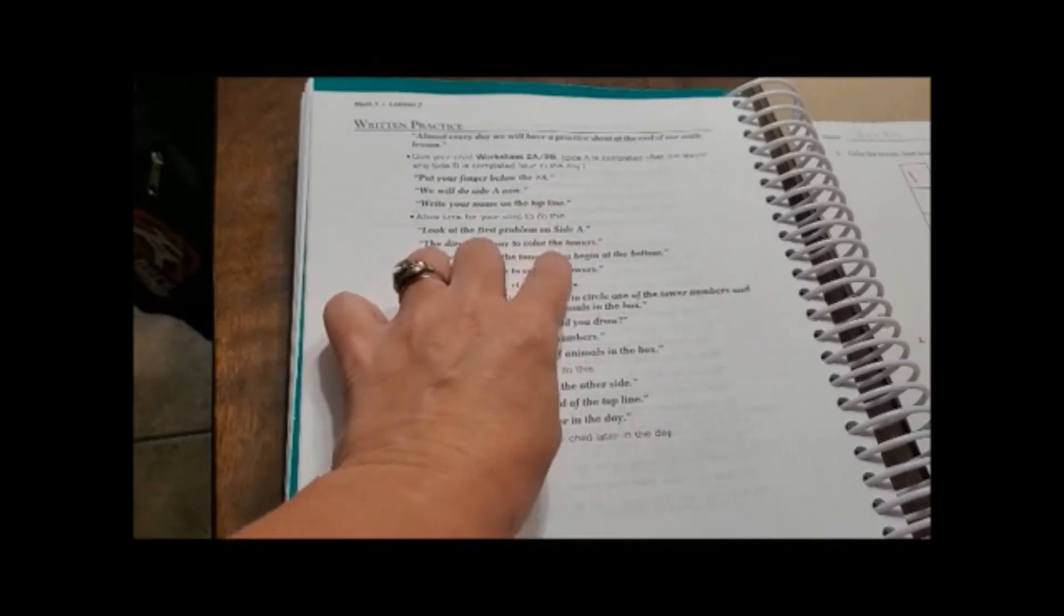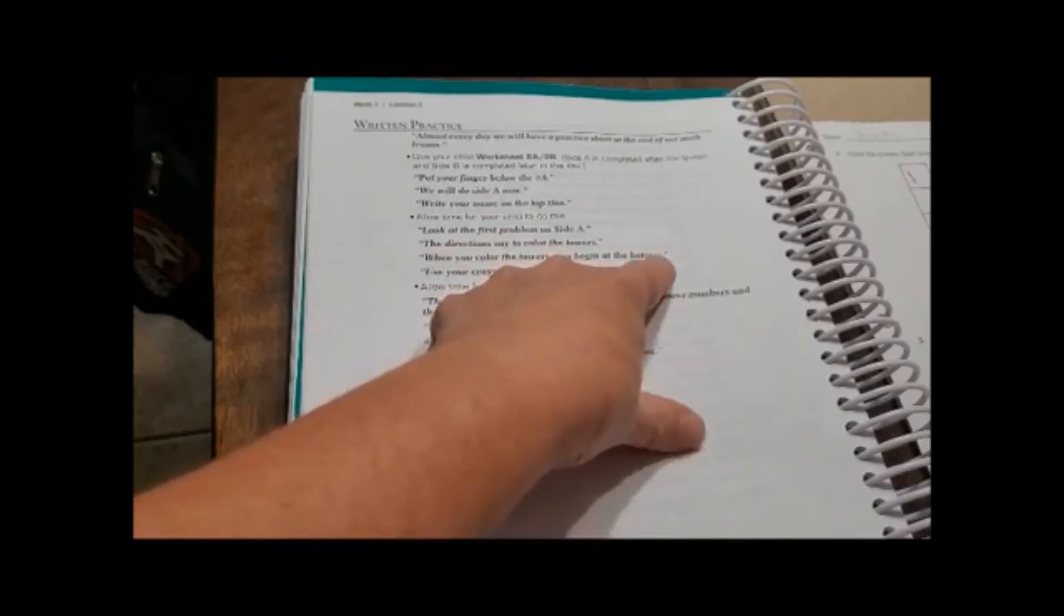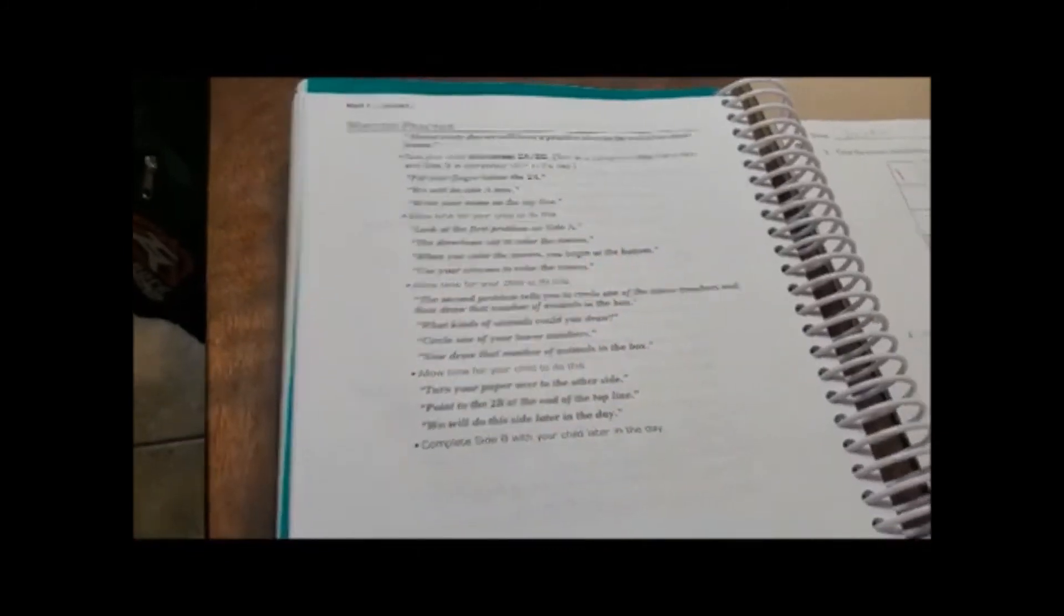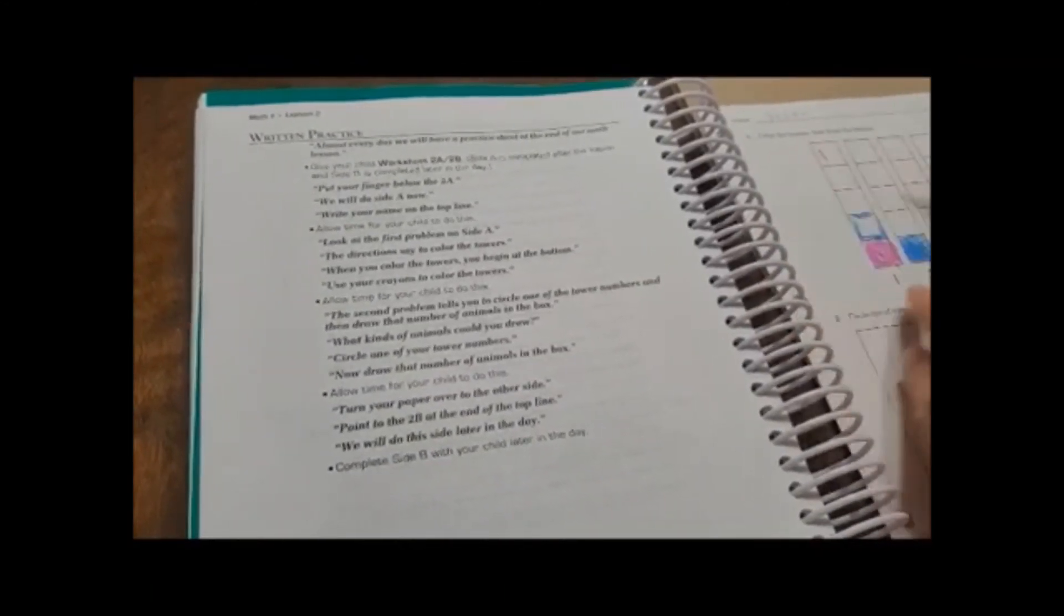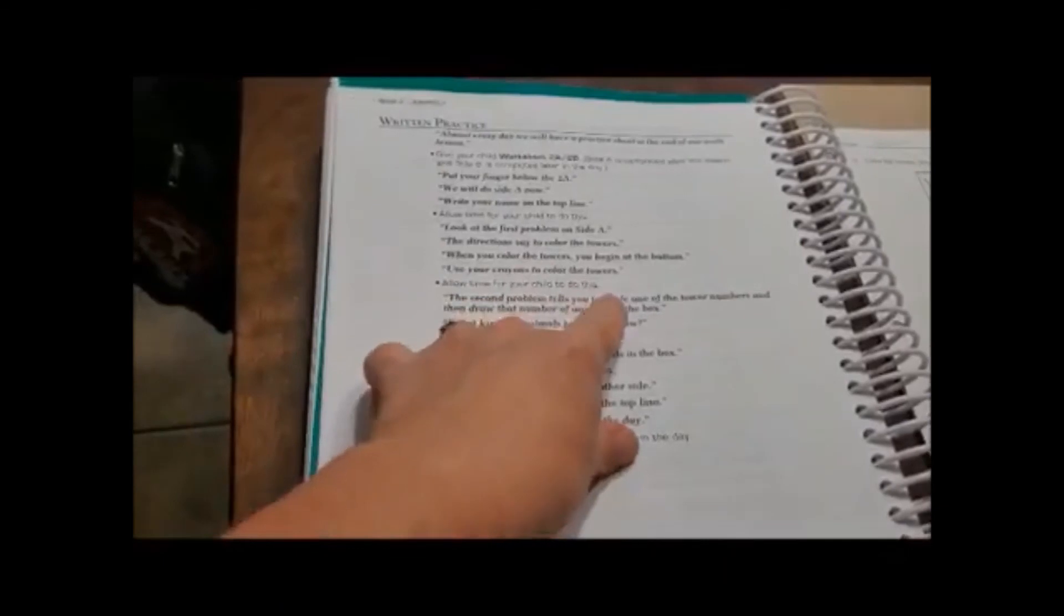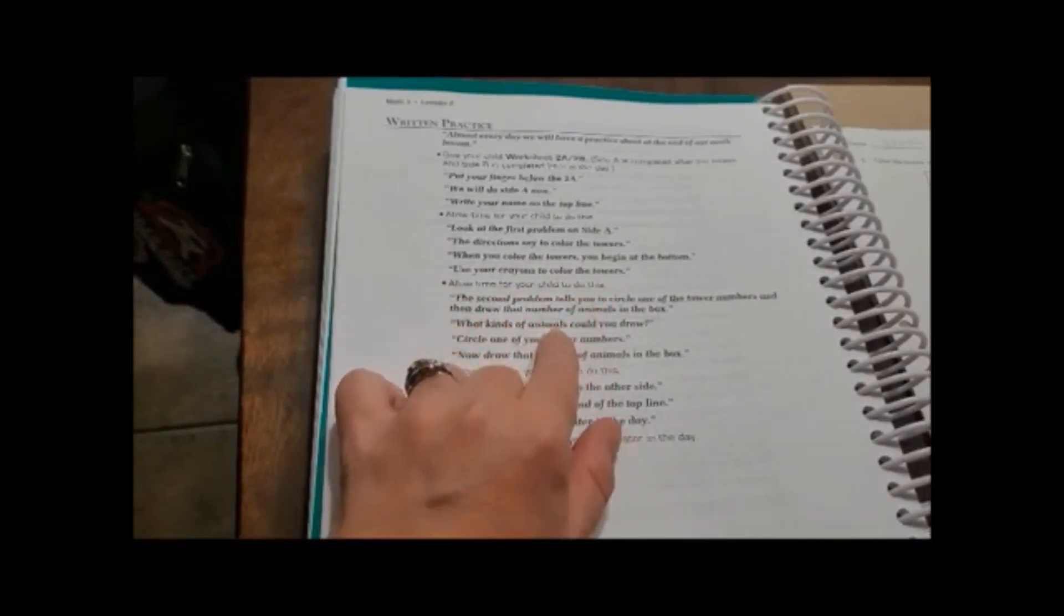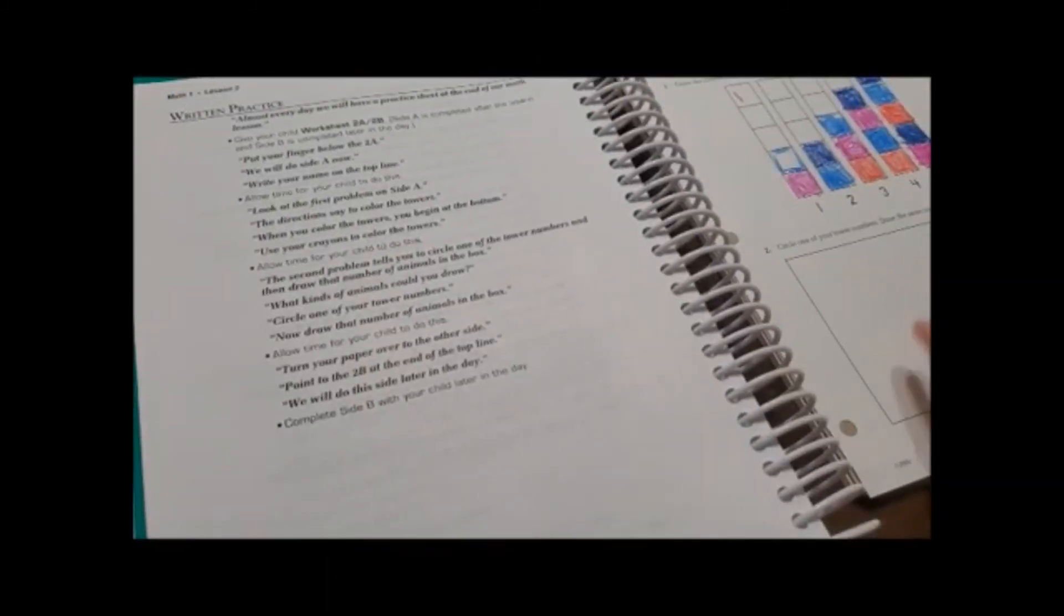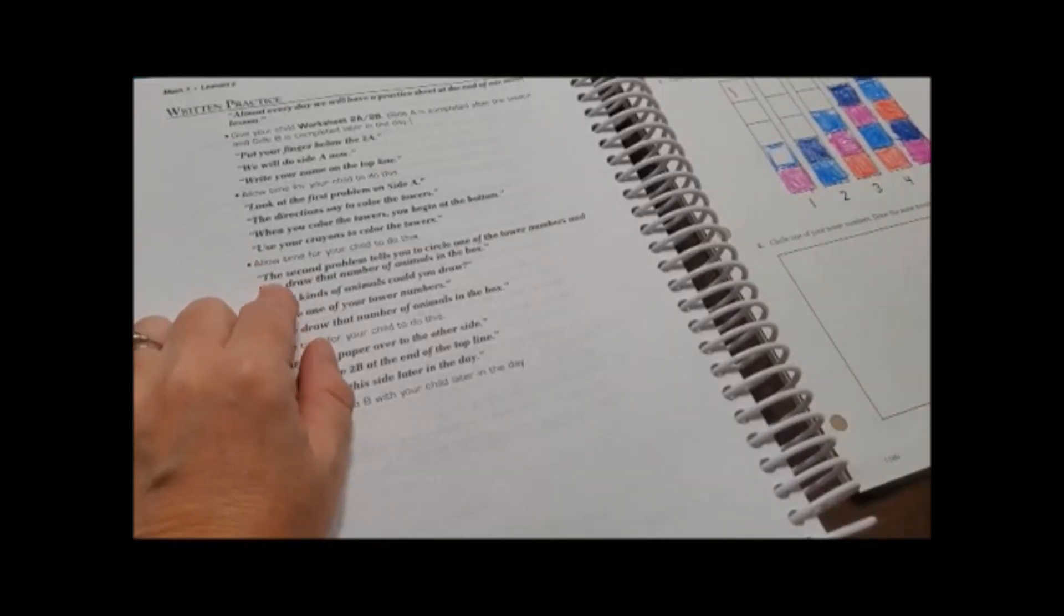The directions say to color the towers. When you color the towers, you begin at the bottom. Well I read the directions to her and she forgot and started here, so then she had to move here. So she was trying to color all five of them, but you have to match your numbers on that. So allow your child to do this, so I'm going to allow her time to finish coloring this and I'll be back in just a second. Alright, now she has finished doing her one through five towers. So we allowed her time to do that.